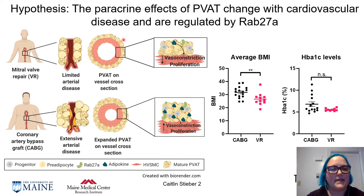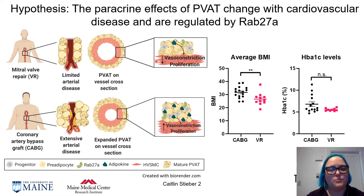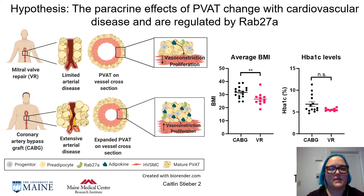PVAT sits on the vessel wall and in metabolically healthy individuals secretes factors to decrease vasoconstriction and proliferation of the underlying smooth muscle. However, in cases of obesity, what is secreted by PVAT changes, increasing vasoconstriction and proliferation of the underlying smooth muscle cells, leading to the closing of the diameter of the lumen, which restricts blood flow and contributes to disease pathogenesis.